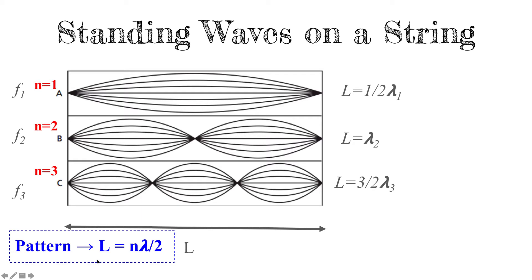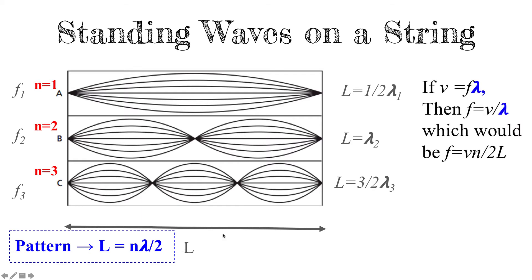We can rearrange the harmonics equation to solve for lambda: λ = 2L/n. Since the wave speed equation gives v = fλ, we can solve for frequency: f = v/λ. Substituting λ = 2L/n, we get the harmonic frequency equation: f = nv / (2L). This is useful for finding the frequency of any harmonic given the harmonic number n and the length of the string.